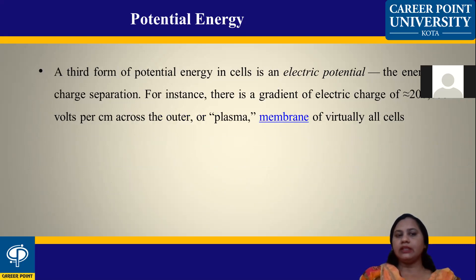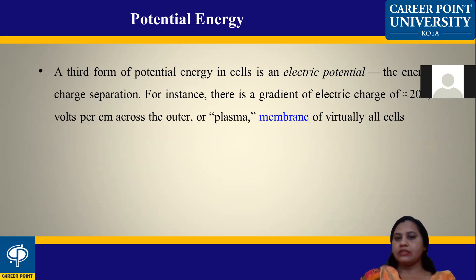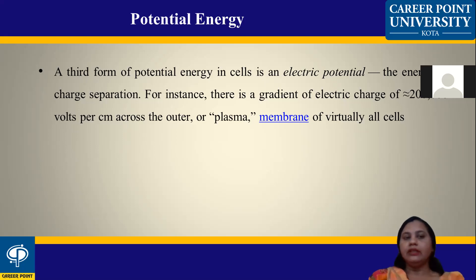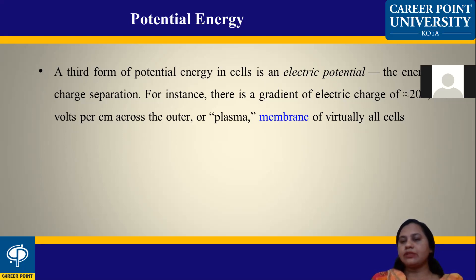The third form of potential energy in cells is an electric potential — the energy of charge separation. There is a gradient of electrical charge of about 2,000 volts per centimeter across the outer plasma membrane in virtually all cells.